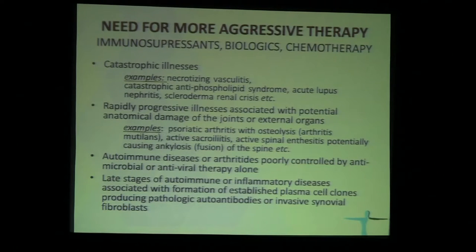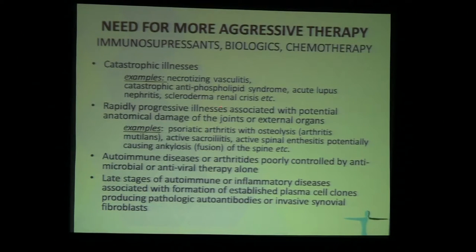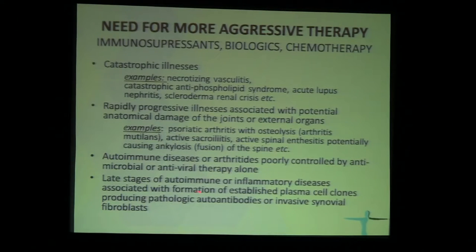Because of our area of practice, we use more aggressive therapy in certain situations. When dealing with catastrophic illnesses — such as necrotizing vasculitis, catastrophic antiphospholipid antibody syndrome, lupus, or scleroderma renal crisis — there's no time to start with antibiotics because the patient may die within months. There's a place for herbs, antibiotics, disease-modifying drugs, immunosuppressants, and biologics. When dealing with rapidly progressive illness that can create major anatomical damage — such as psoriatic arthritis with osteolysis, or active sacroiliitis causing spinal fusion — you need to be very aggressive or you'll lose the window of opportunity and patients will be handicapped for life.